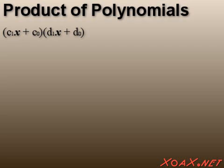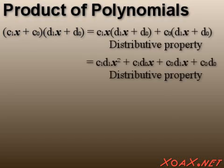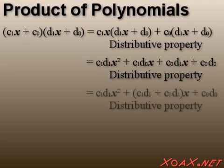For multiplication, we recall that a polynomial is the sum of monomials and use the distributive property to multiply the monomial terms. Then we collect the like terms and combine them.